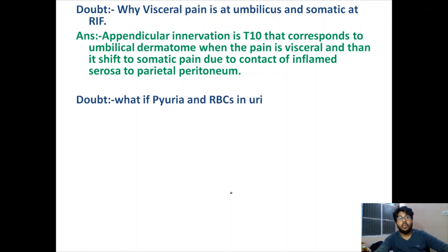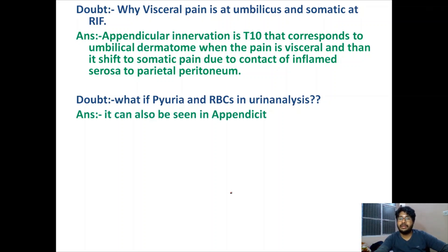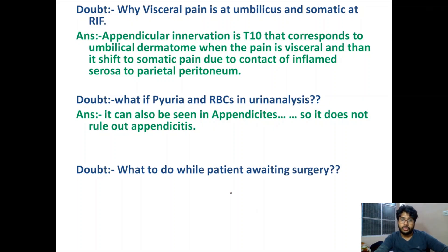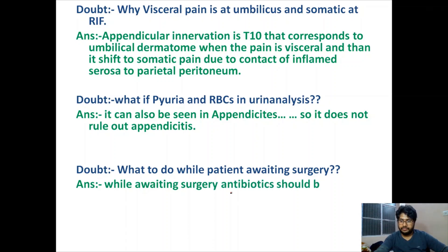Another doubt: what if there is pyuria and RBCs in urine analysis? Do not be confused — this can also be seen in appendicitis, so get a CT scan. If a patient is awaiting surgery, you must give antibiotics, which can be fluoroquinolones plus metronidazole, or second-generation cephalosporins.